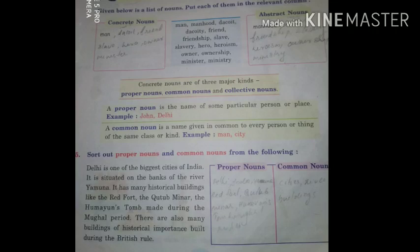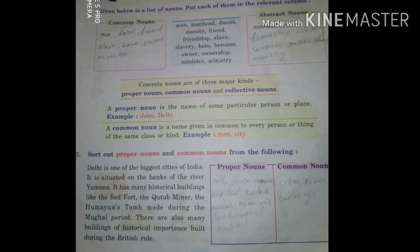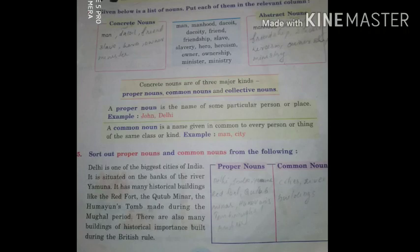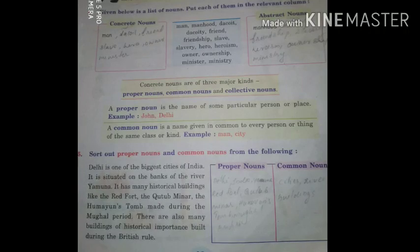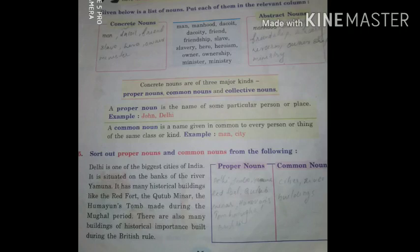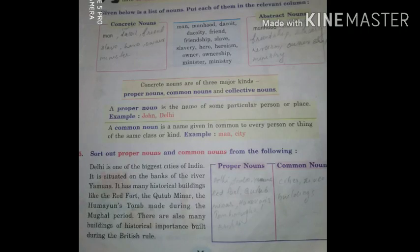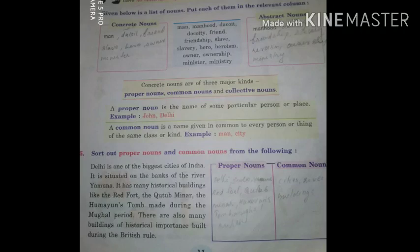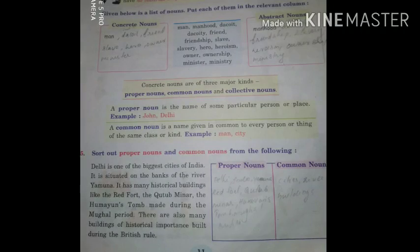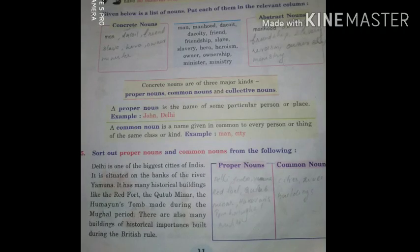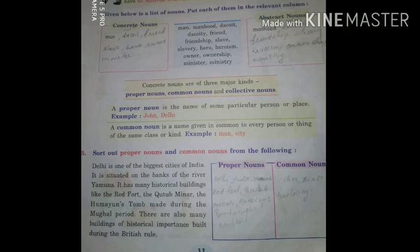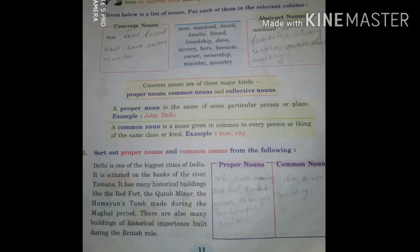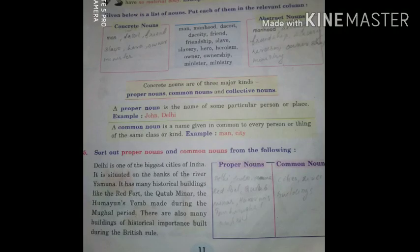A proper noun is the name of some particular person or place — for example, 'John' or 'Delhi.' A common noun is the name given in common to every person or thing of the same class or kind — for example, 'man' or 'city.' So 'man' and 'city' are common nouns, as they are used commonly.